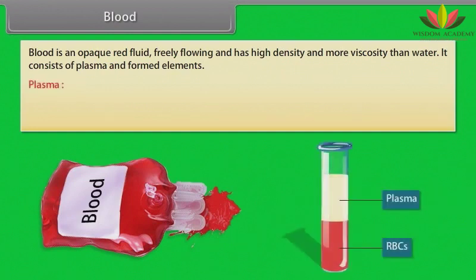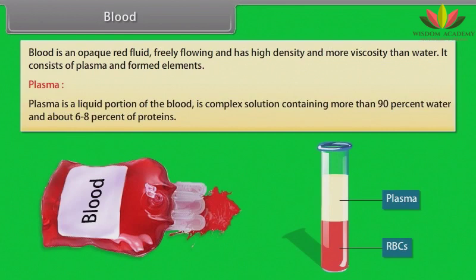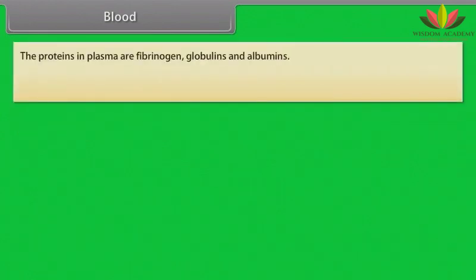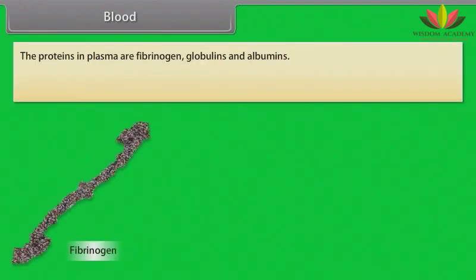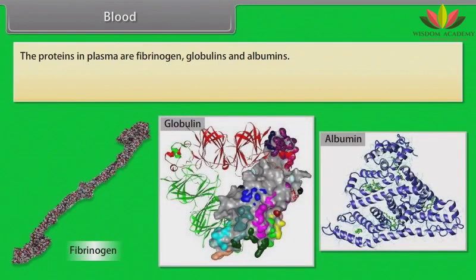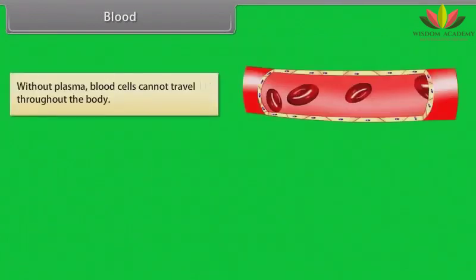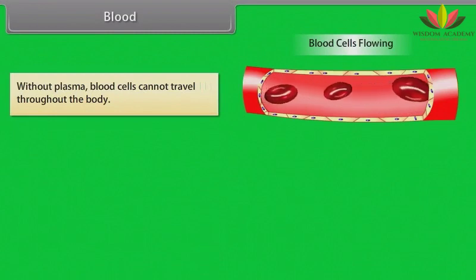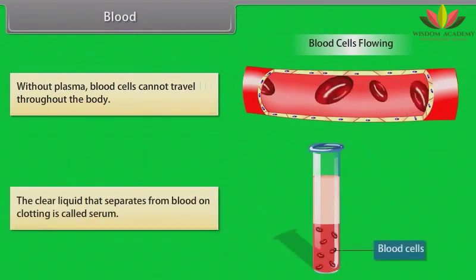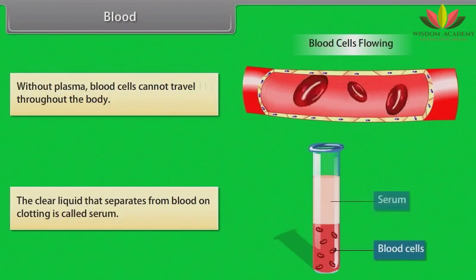Plasma is the liquid portion of the blood. It is a complex solution containing more than 90% water and about 6–8% proteins. The proteins in plasma are fibrinogen, globulins, and albumins. Fibrinogen helps in blood clotting; globulins are involved in the defense system of the body; and albumins are responsible for maintaining water balance in the blood. Without plasma, blood cells cannot travel throughout the body. The clear liquid that separates from blood on clotting is called serum.